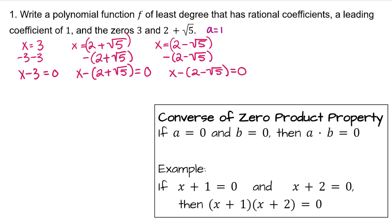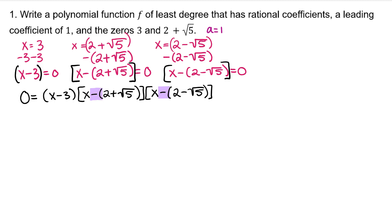Now the converse of the zero product property would state that if each of these expressions is equal to 0, then multiplying these expressions by each other will also be equal to 0. I'm going to distribute this negative 1 to remove the parentheses within these bigger bracket groups.